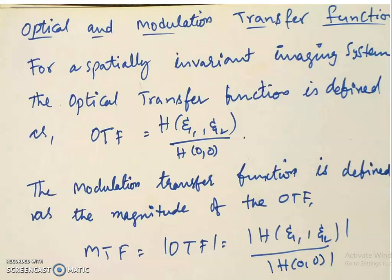What does dividing by H of 0, 0 represent? H of 0, 0 is supposed to be the maximum value of H of ζ₁, ζ₂. So we are dividing by the maximum value, which will always return the function to have a maximum value of 1. H of ζ₁, ζ₂ has maximum value H of 0, 0, so if we divide by H of 0, 0, the maximum value of the OTF will be 1.